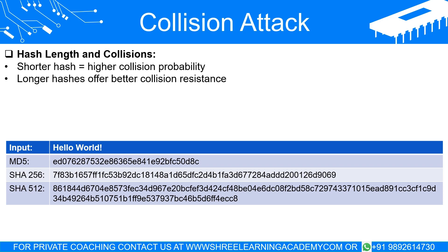Role of hash length in preventing collisions. The likelihood of hash collisions is inversely proportional to the length of the hash value produced by the hash function. Simply put, the shorter the hash, the higher the probability of a collision. For example, a hash function that produces a 128-bit hash value will be more susceptible to collisions than one that produces a 512-bit hash value, because the longer hash has a much larger set of possible hash values, making collisions less likely. Imagine trying to assign unique numbers to a group of people: if you use only single-digit numbers (0–9), you will start repeating after the 10th person, but if you use a wider range up to a thousand, you can uniquely identify more individuals without repeating.